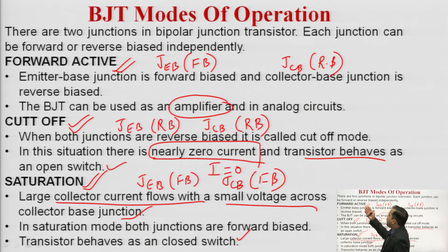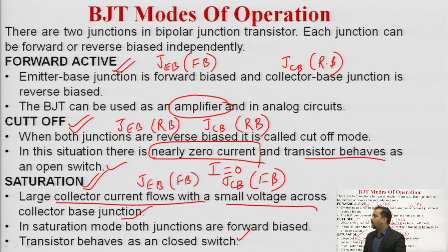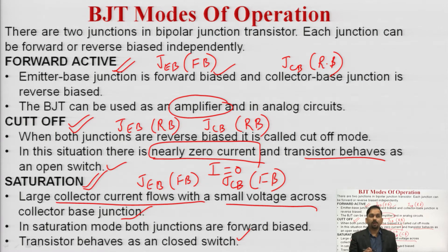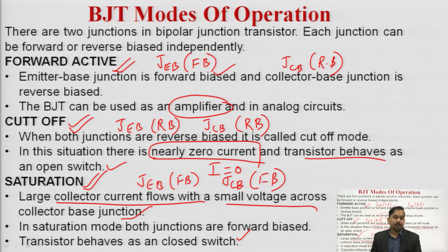In the reverse active mode — the reverse of amplification — the device produces attenuation. This occurs when the emitter-base junction becomes reverse biased and the collector-base junction becomes forward biased. That is the application of the reverse active region.